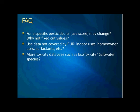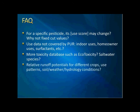The next question: what about use data not covered by PUR? We don't consider any data not covered by PUR, such as indoor use, homeowner applications, and surfactants. The idea is that we try to do prioritization based on data available in PUR rather than give an exact prediction of water concentration in a river, and we think it's totally fine to use that as an index. How about including more databases such as ecotoxicine or saltwater species? We are pretty confident because the surface water program participated in the U.S. EPA benchmark development. In the future, the final objective is to use only the U.S. EPA benchmark after our significant contribution to that part of the database. The relative runoff potential for different crops, use patterns, soil, weather, and hydrology conditions are not included in phases one and two, but maybe a direction for future studies.